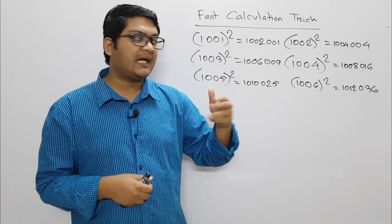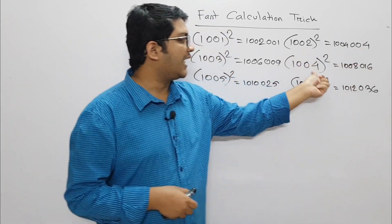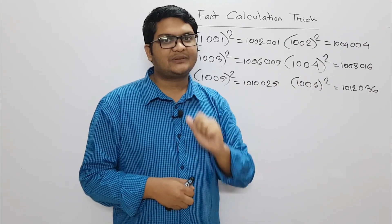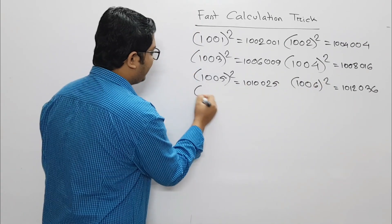104 squared equals 10816. 105 squared equals 11025. 106 squared equals 11236. So we're going to roll 1007.